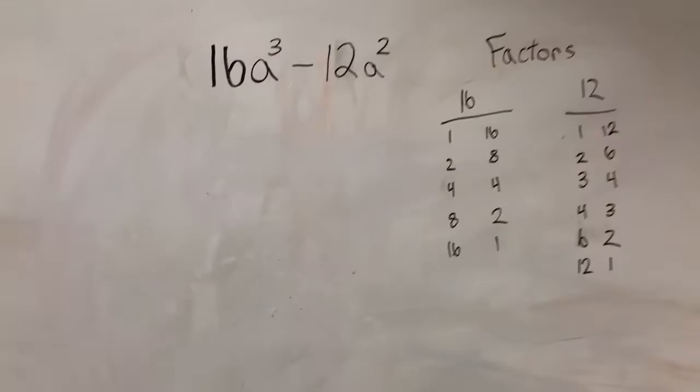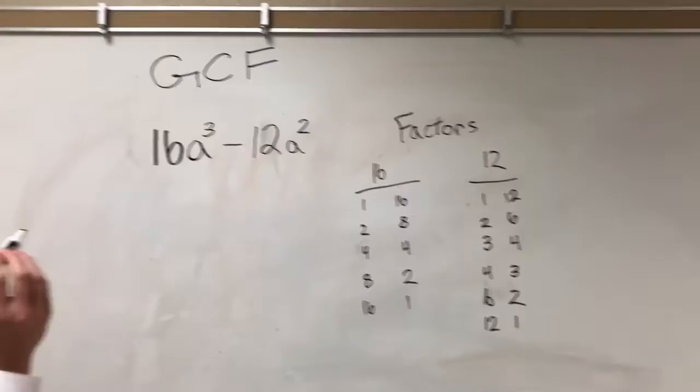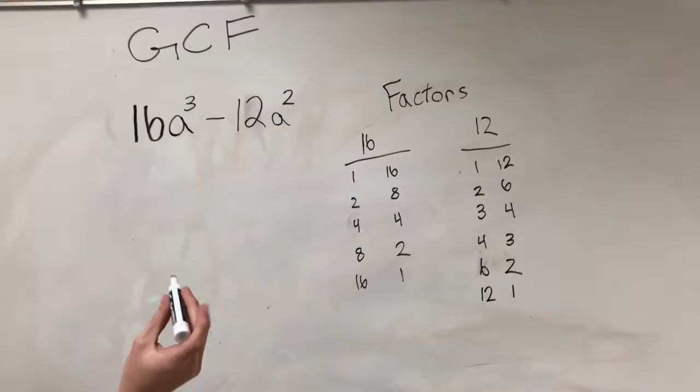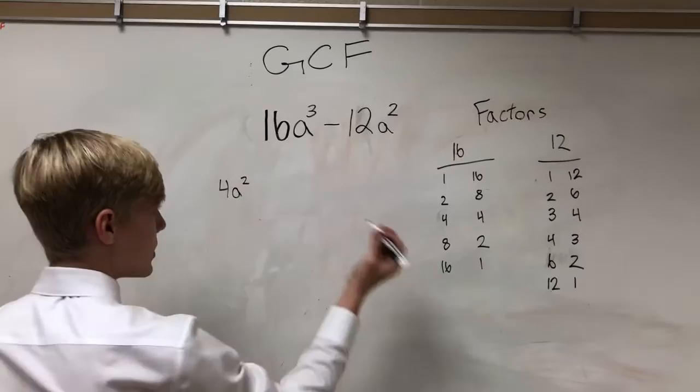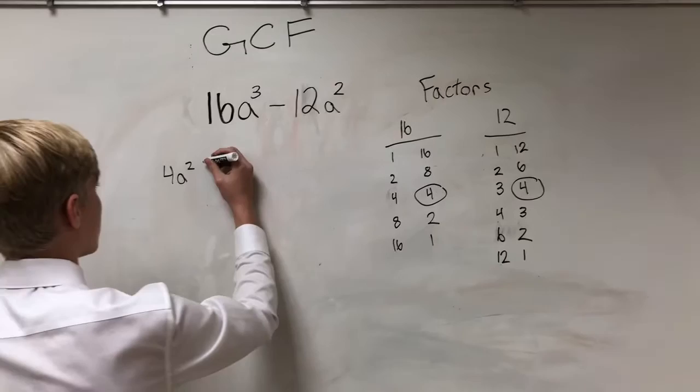If there are no common prime factors, then the GCF is 1. So the greatest common factor of the terms 16a cubed and -12a squared would be 4a squared, because after you list them out, they both have 4 in common. So your equation would be 4a squared times (4a minus 3).